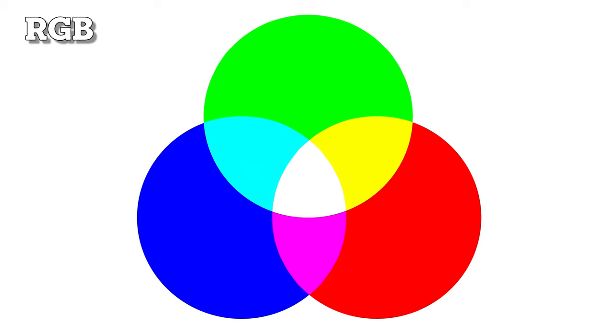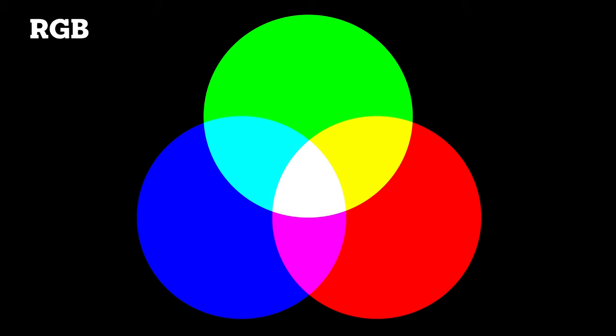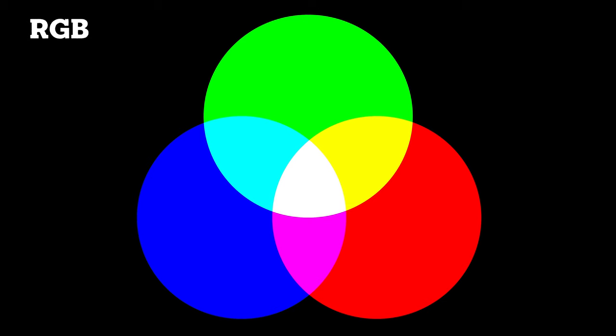When color is painted onto a canvas, the more you blend colors, the darker they get. Whereas with a monitor, the color is created from light, so the more you add, the brighter it gets.